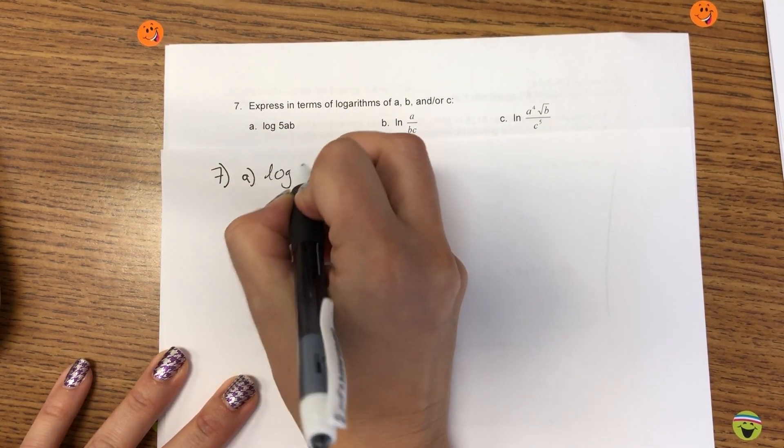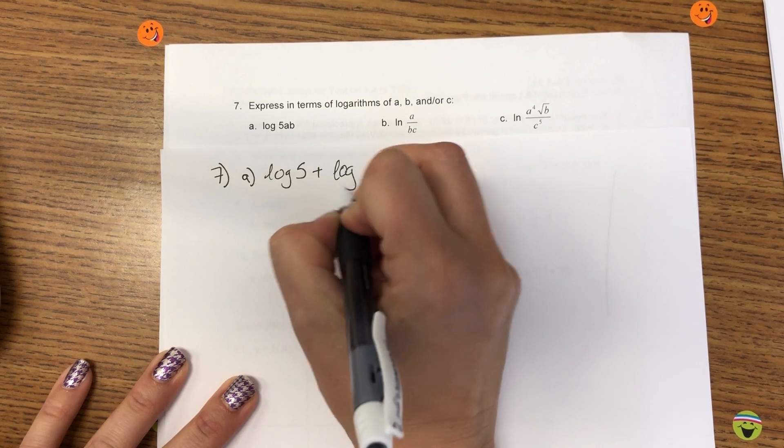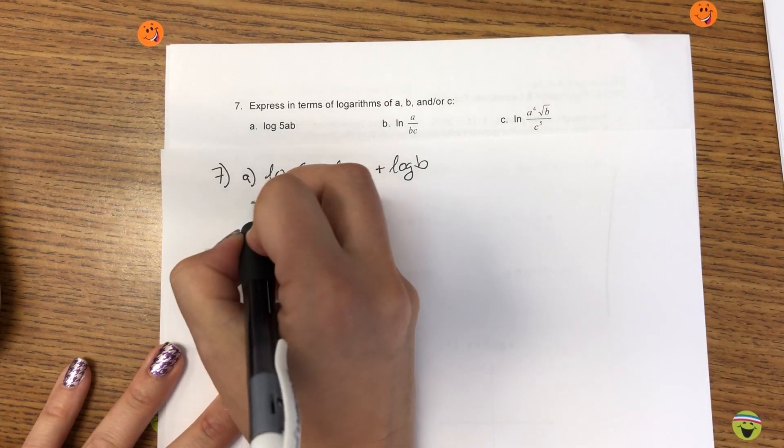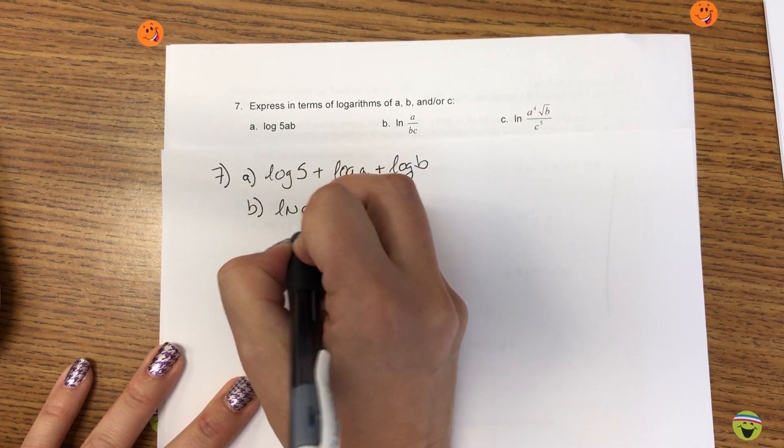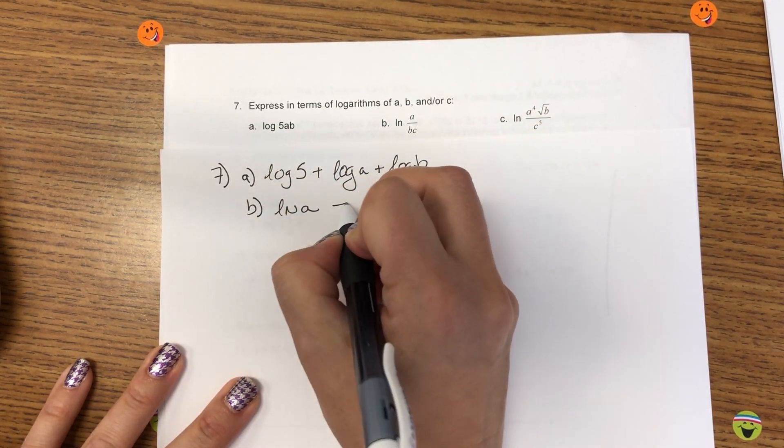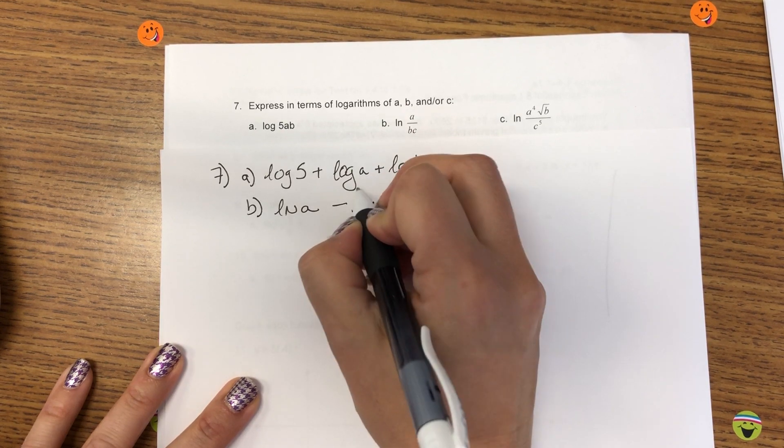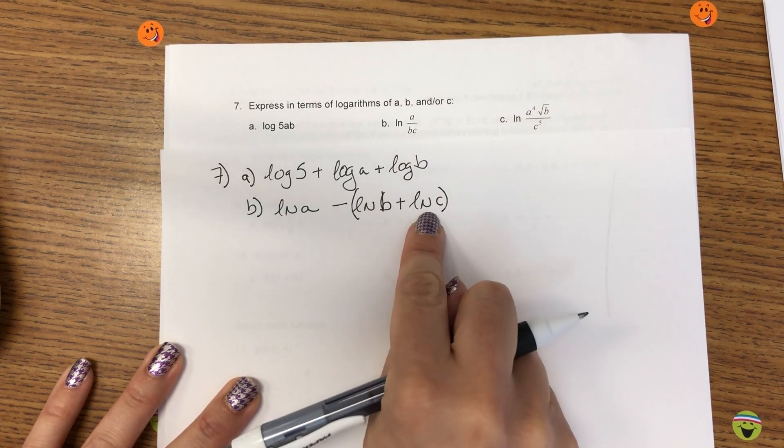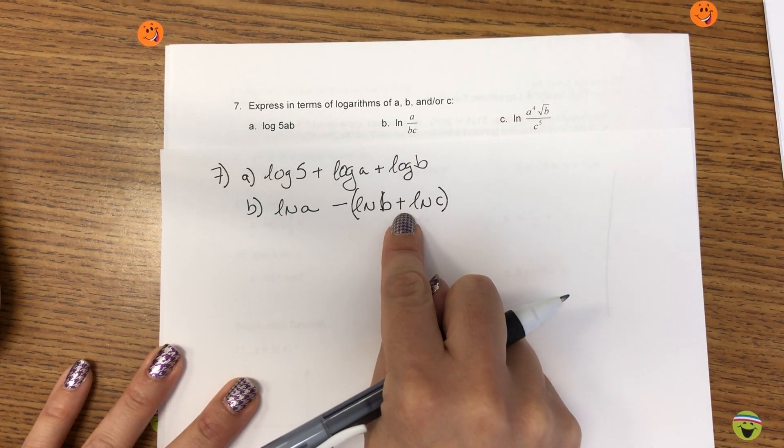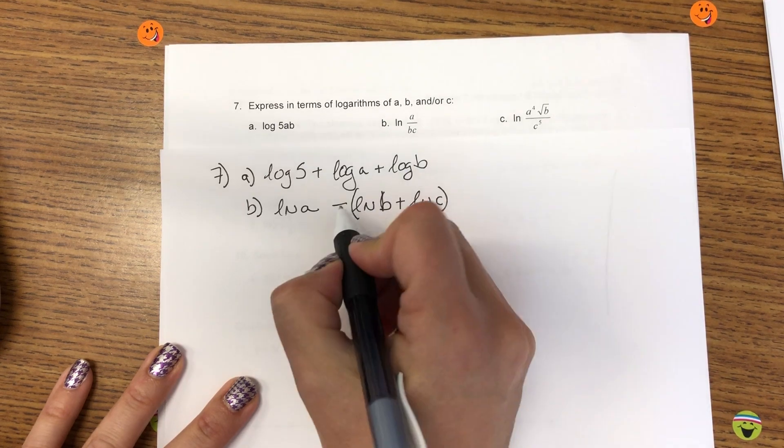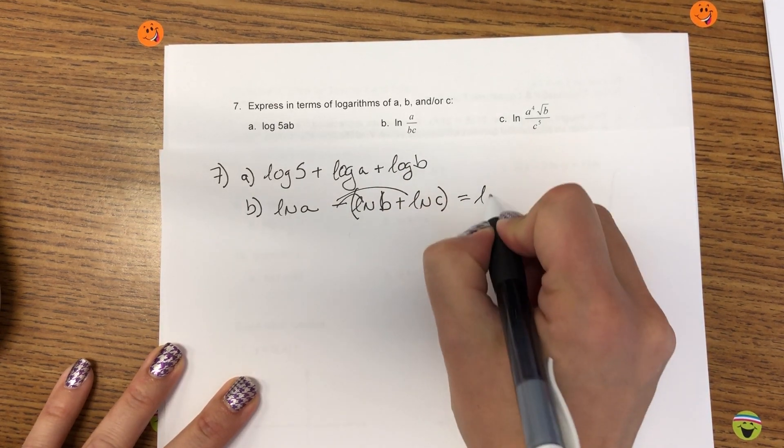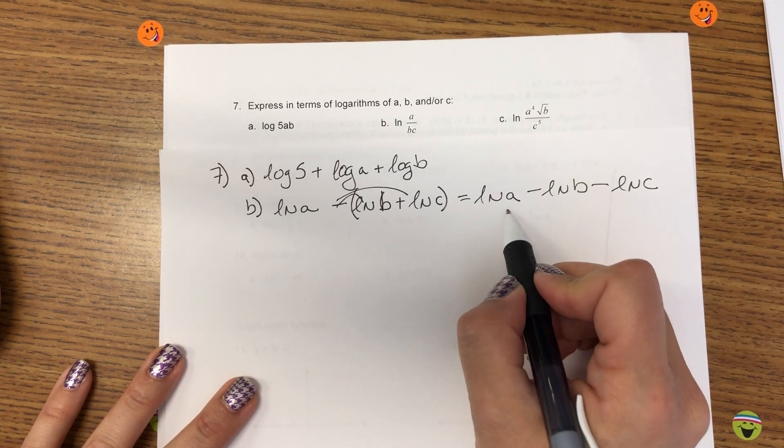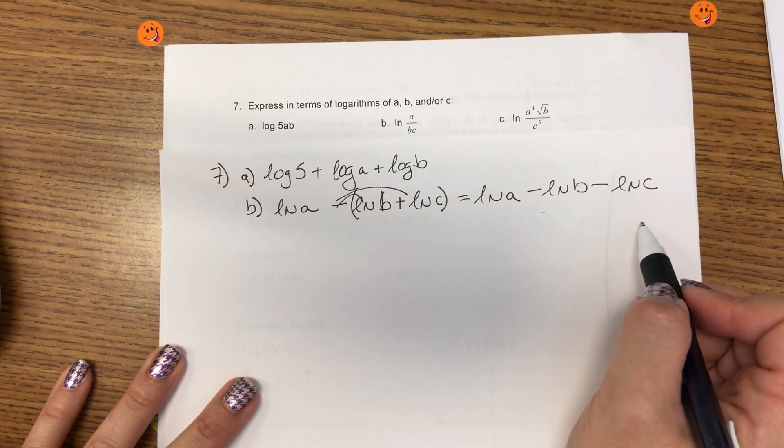When the argument is multiplied, we can expand our logs with addition. When the denominator is there, so technically the denominator is a product, so there's addition between the log of B and the log of C. But since it's all in the denominator, I can distribute the negative.